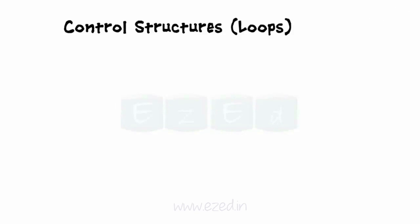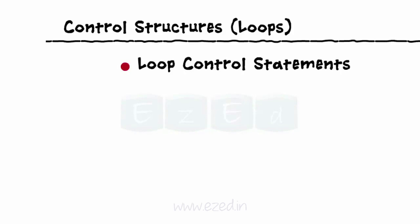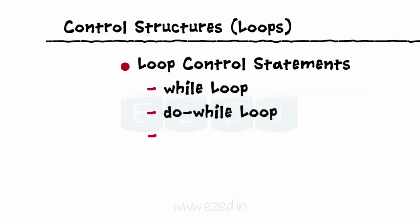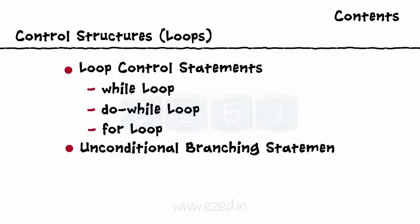In this Easy Ed video lecture, we are going to learn what are iterative and loop type of control statements in C. The various types of loops, namely while, do-while, for, and special control statements, namely goto, break, and continue.